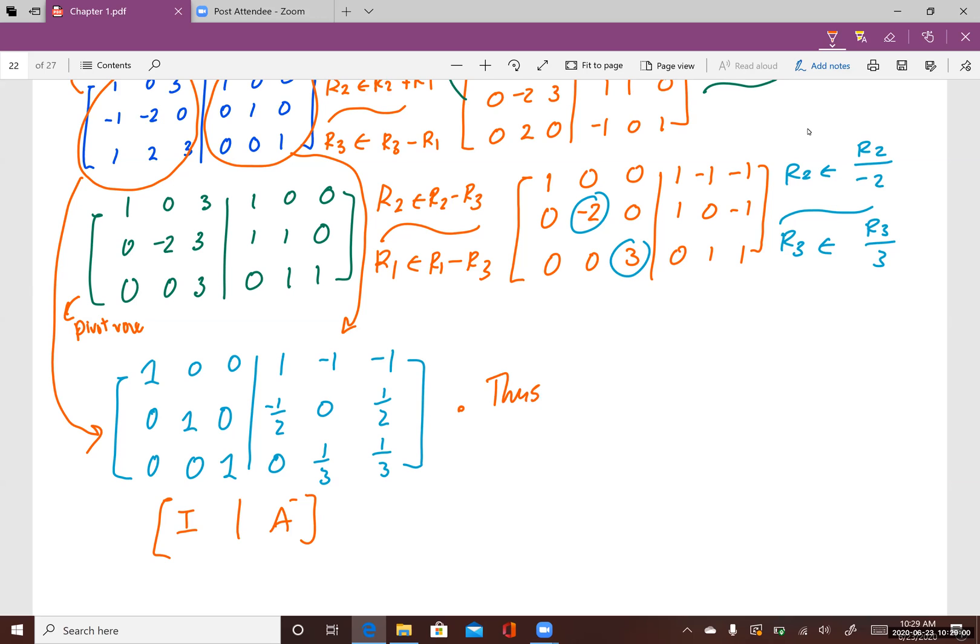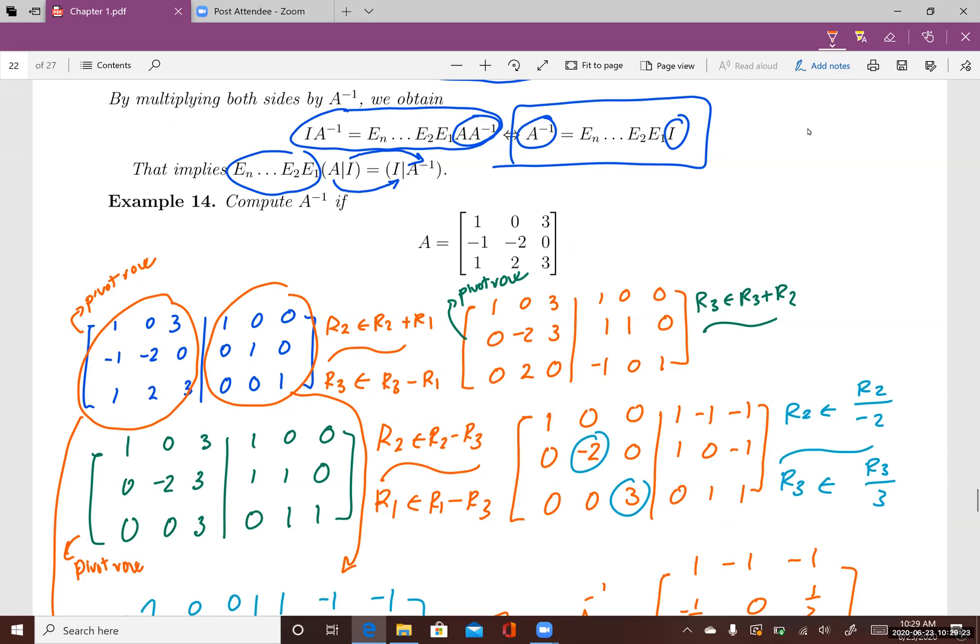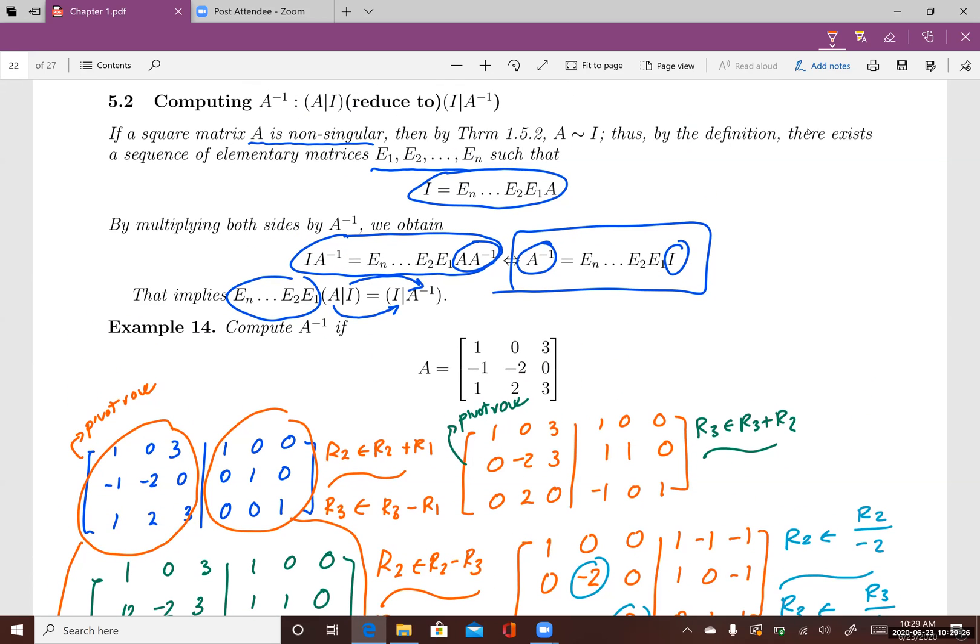Thus, A inverse equals 1, negative 1, negative 1, negative 1 half, 0, 1 half, 0, 1 third, and 1 third. This is how you find the inverse matrix of a non-singular matrix using row operations and elementary matrices. Thank you very much brothers and sisters.